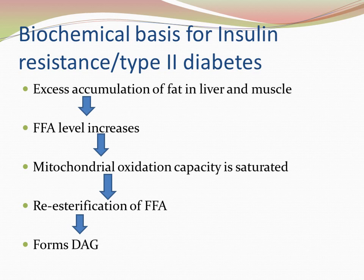Ideally, these free fatty acids in the circulation should enter the liver and then enter the mitochondria for beta oxidation — the breakdown of fatty acids to acetyl-CoA, which takes place only in mitochondria. However, when there is too much free fatty acid available, the mitochondria become saturated. Their oxidative capacity is completely saturated, so free fatty acids can no longer enter the mitochondria and remain in the cytoplasm.